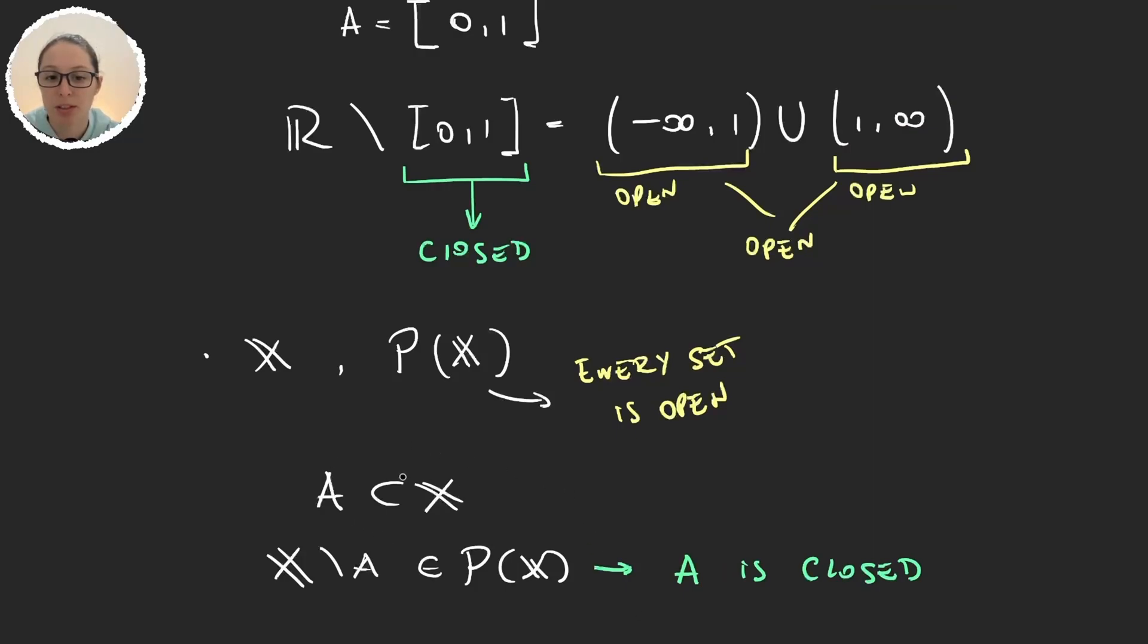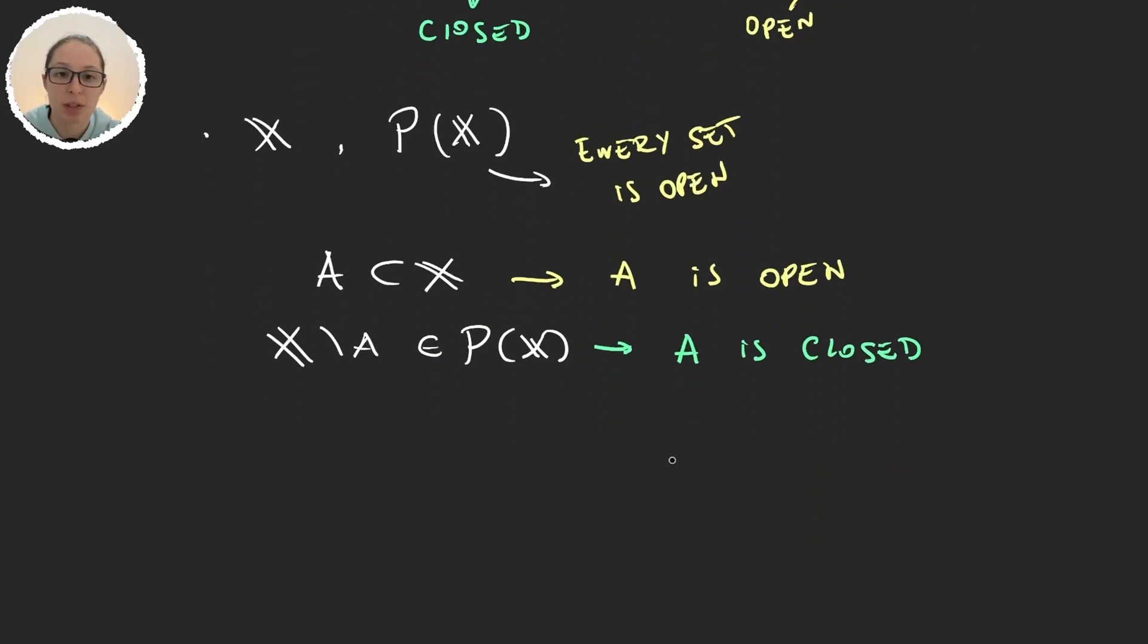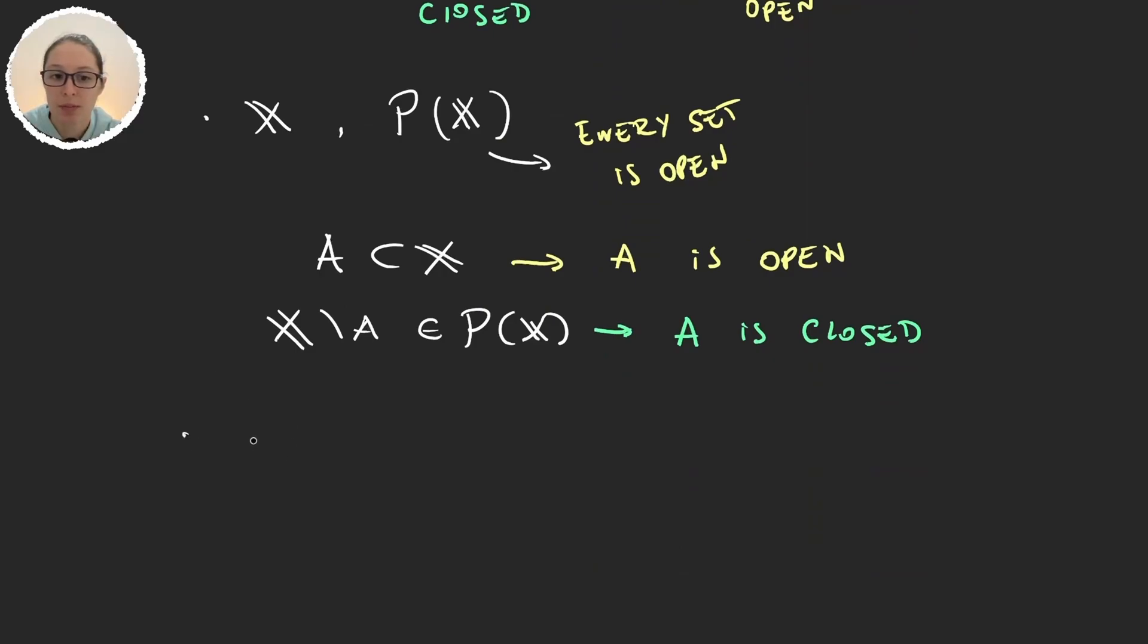But because A is a subset of X, then A is an element in parts of X and so A is open. So it can happen for a set to be both open and closed. And that is actually what happens for example in any set with any topology.